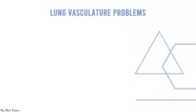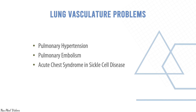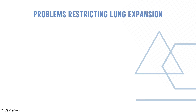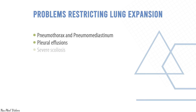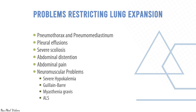Vascular problems of the lungs include pulmonary hypertension, pulmonary embolism, and acute chest syndrome as in sickle cell disease. Pulmonary problems restricting expansion of the lung include pneumothorax, pneumomediastinum, pleural effusions, severe scoliosis, abdominal distension, abdominal pain, and neuromuscular problems like severe hypokalemia, Guillain-Barré syndrome, myasthenia gravis, and ALS.